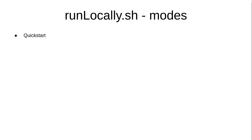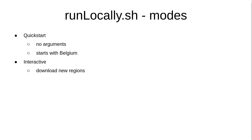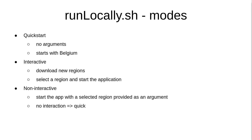The run script works in three different modes. The first mode is the quick start mode that starts the application with Belgium. This is because we have a built-in data set with Belgian cities, so in the quick start mode you simply run the script with no arguments. The other modes are the interactive mode that lets you download new regions and start the application with the selected region, and finally the non-interactive mode that takes the working region as an argument.